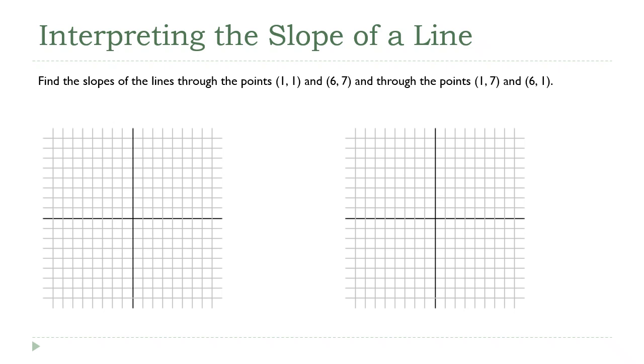All right, so I'm going to start with these first two points here, 1 comma 1 and 6 comma 7. And I'll draw the line connecting them. So we're trying to find the slope of this line here. And remember what the formula looks like. The formula is the change in the y values, the difference of the y values divided by the difference of the x values.